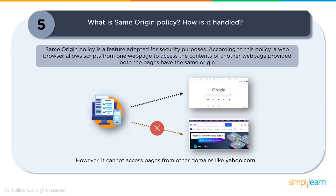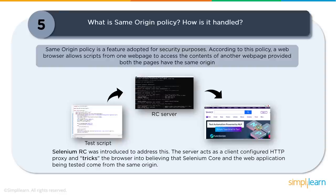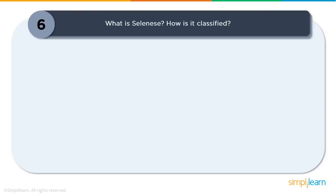Due to same origin policy, you are limited to accessing only elements and pages within the same domain. This became a major limitation with early Selenium tools when tests needed to run on multiple servers and domains. This was handled by Paul Hammond who created Selenium Remote Control — a server to trick the browser into believing the Selenium Core and the web application under test came from the same domain. This is how same origin policy was handled, and Selenium RC became version one of Selenium.